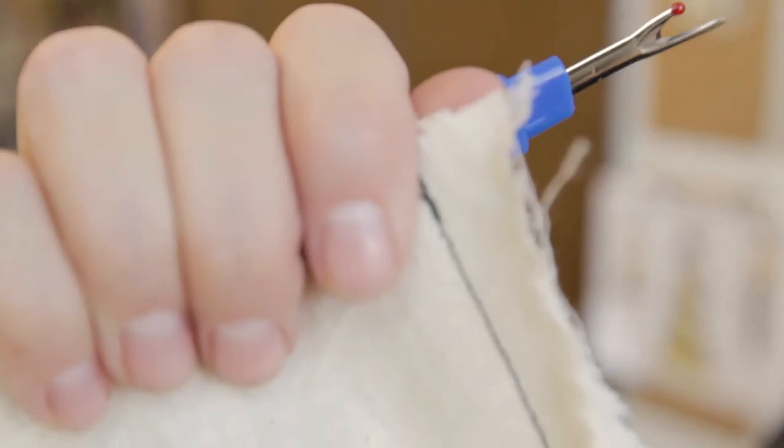I sewed up a piece of muslin with black thread in it so that way it's really easy for you to see. Now let's start ripping some seams. First thing I'm going to do is get rid of these pesky back stitches.